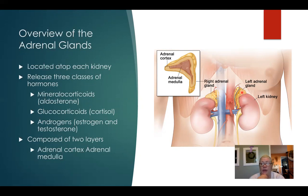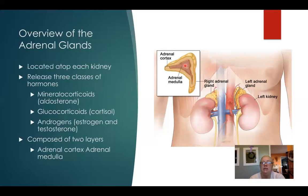The levels of androgens produced in the adrenal glands are very, very low. They include estrogen and also testosterone. If we look at the adrenal glands, we notice it is separated into two separate parts: the outer portion called the cortex, and the inner portion called the medulla. The cortex is responsible for producing those mineralocorticoids, glucocorticoids, and androgens. The adrenal medulla produces a class called catecholamines, which includes epinephrine and norepinephrine. Different sections, different hormones produced.